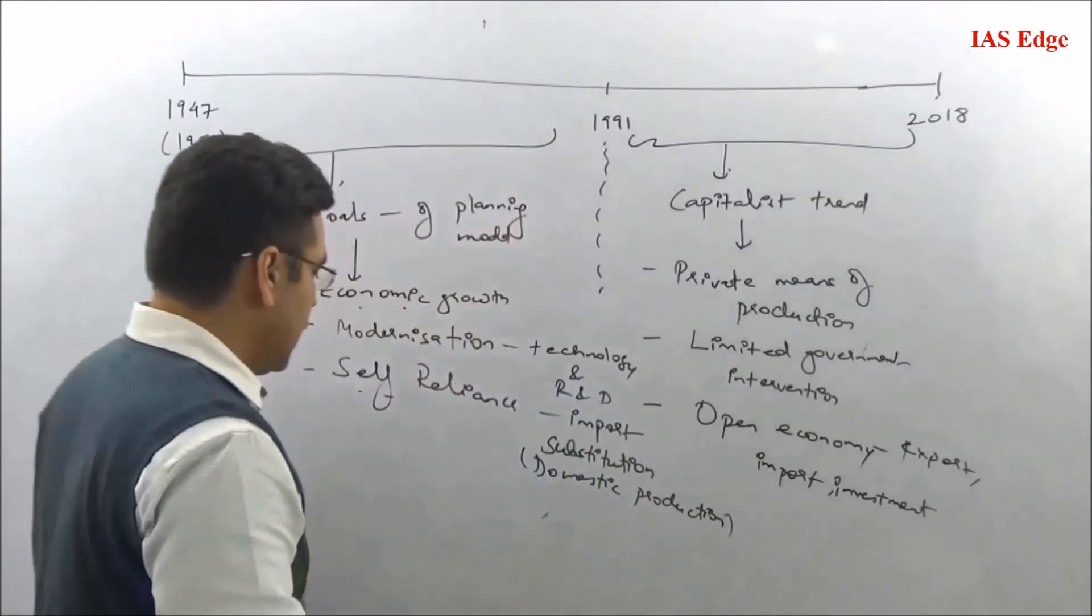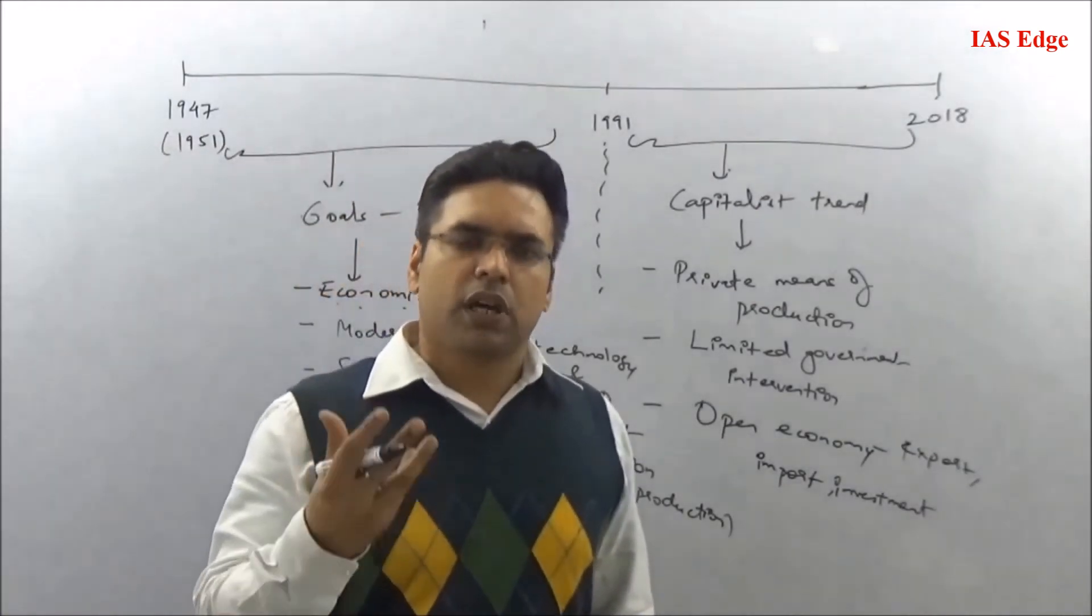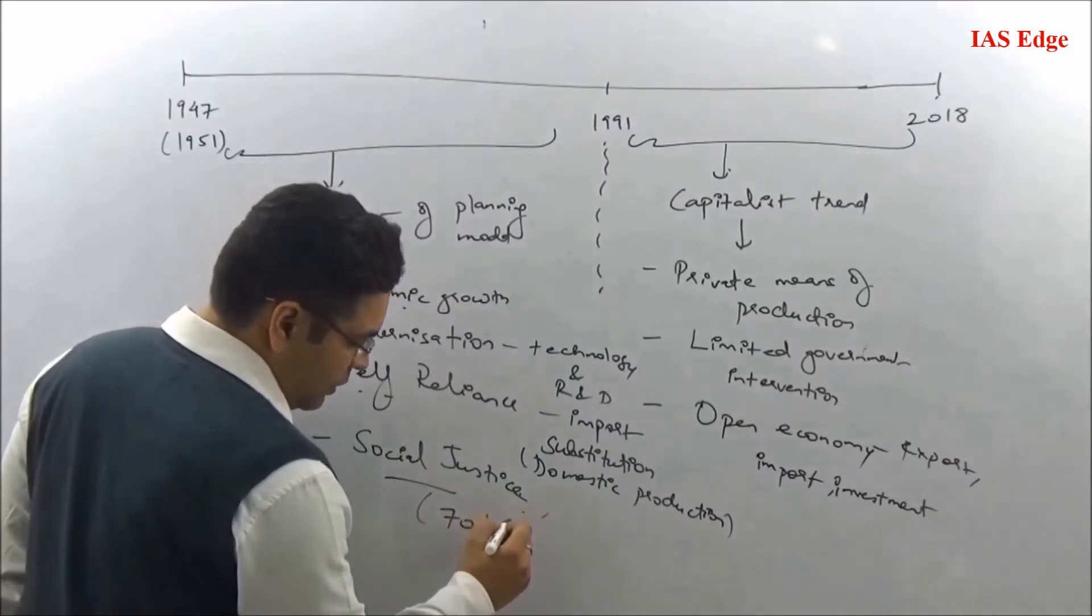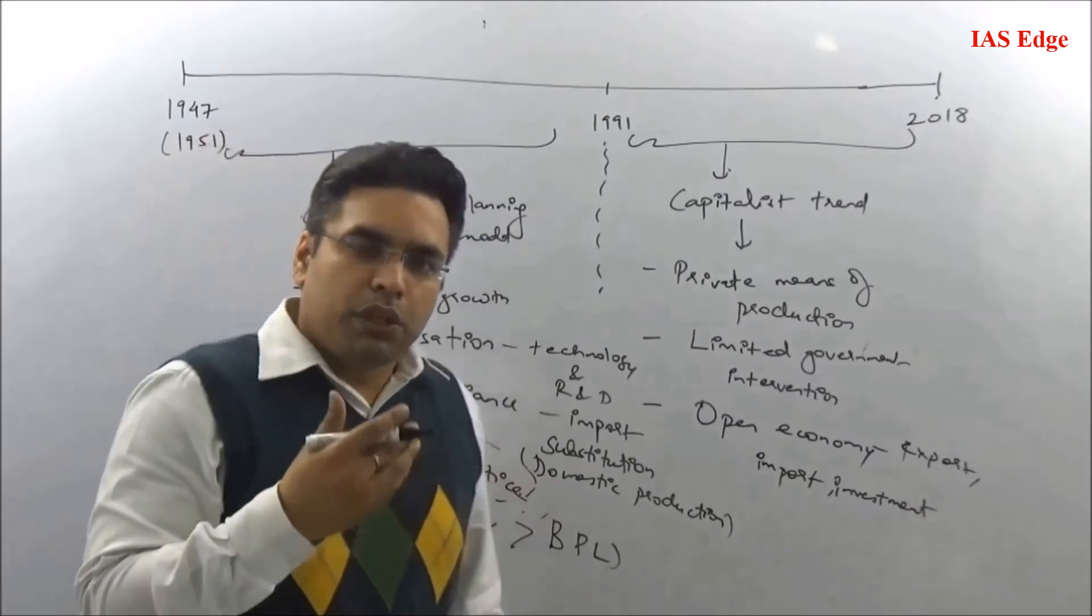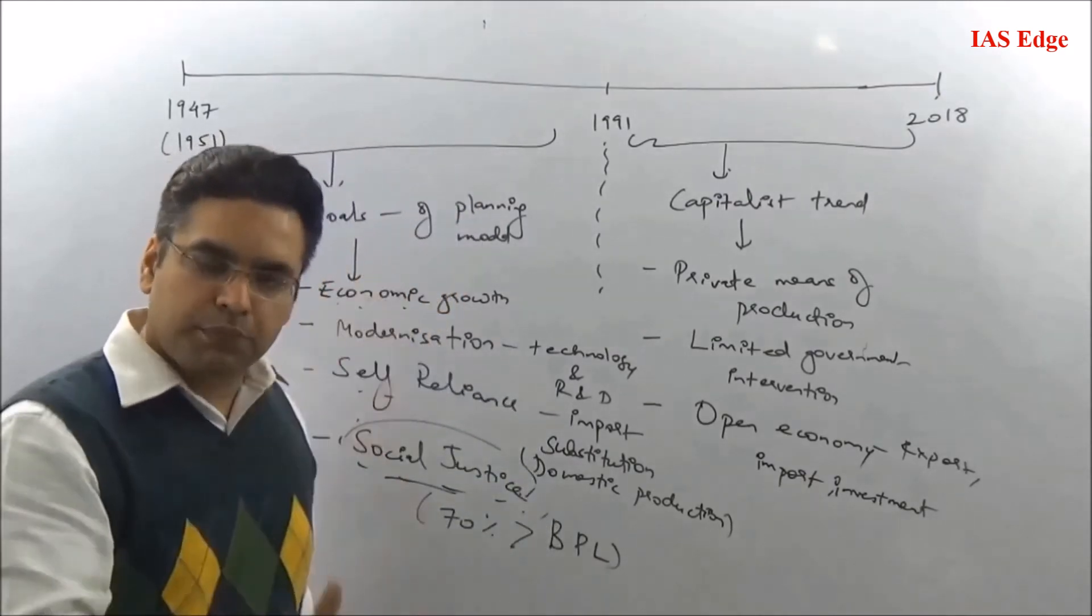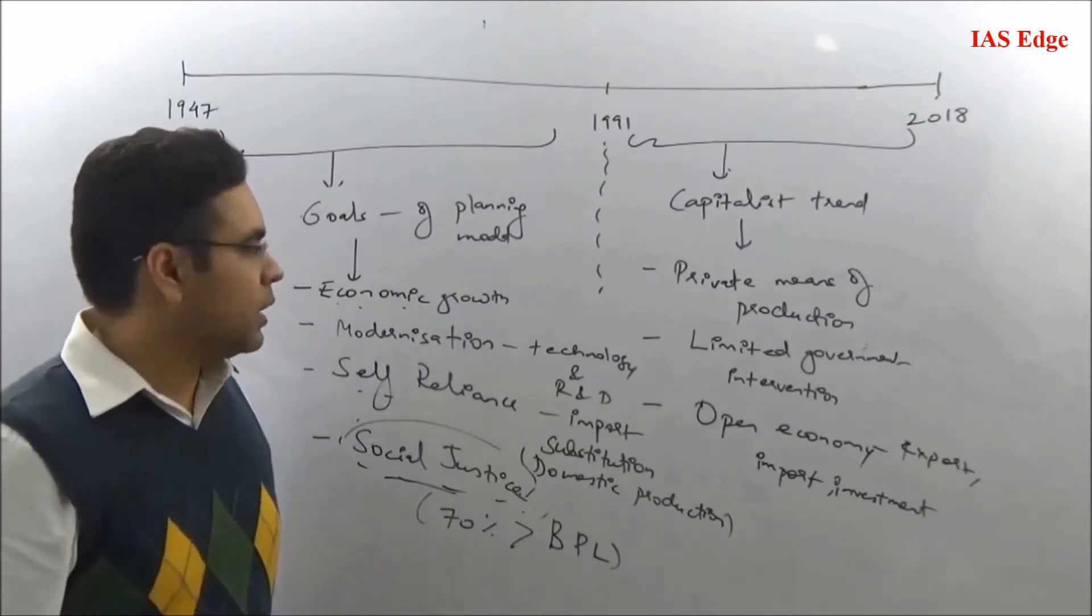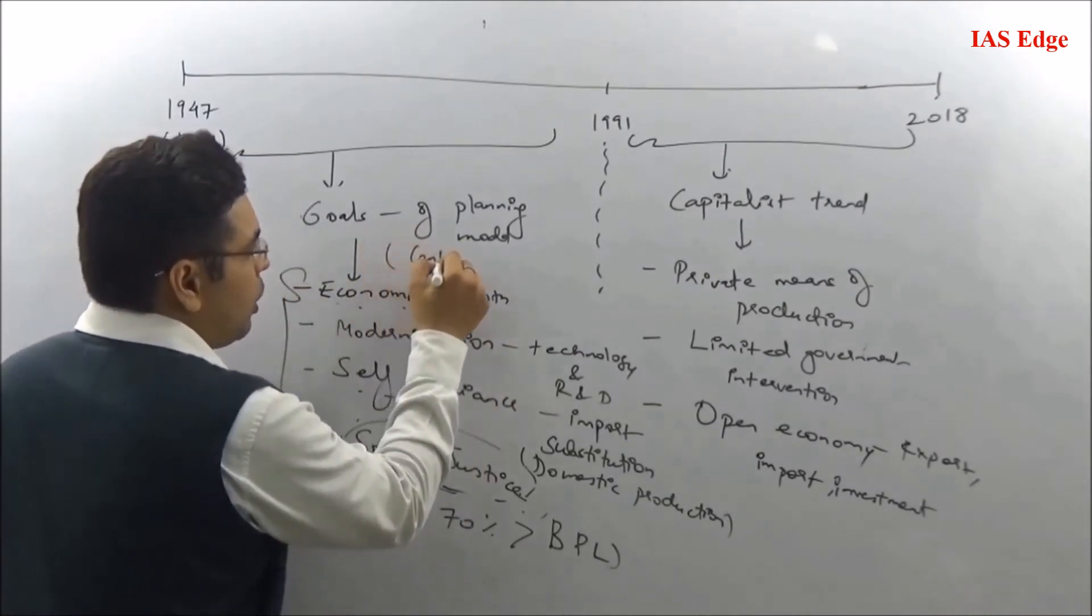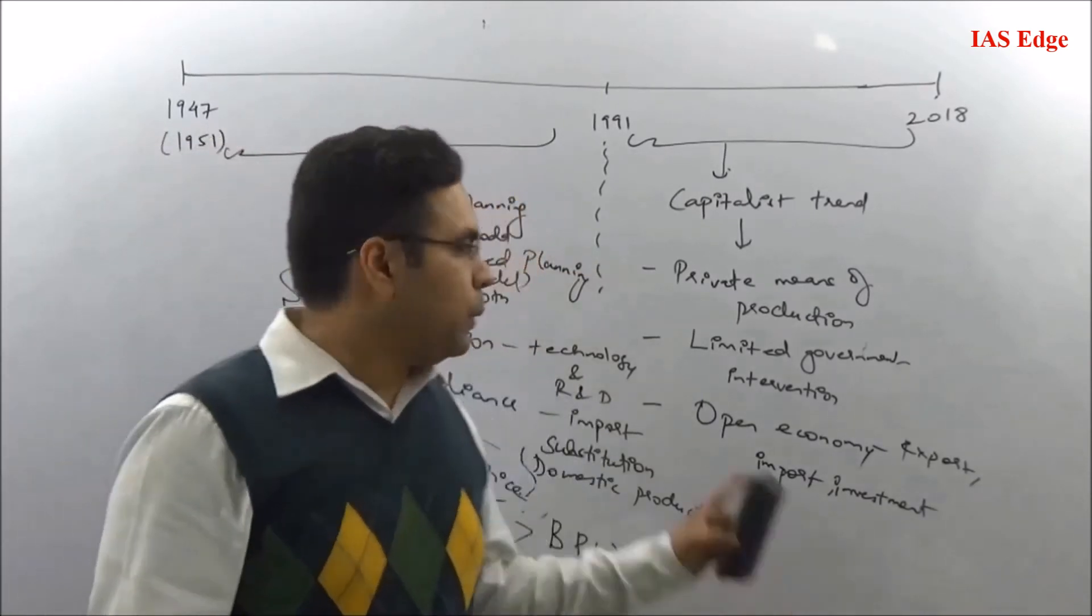The fourth is social justice, an approach to help the have-not society. More than 70% of India's population was below the poverty line during independence. We focused on ensuring the population has basic resources like education and health. Justice also means addressing class divisions that existed in our stratified society.